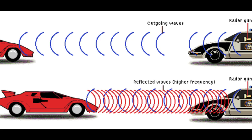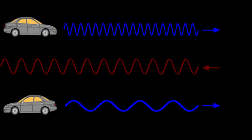As the vehicle moves, the frequency of the reflected waves changes due to the Doppler effect. If the vehicle is moving towards the radar gun, the reflected waves have a higher frequency, and if the vehicle is moving away, the waves have a lower frequency.